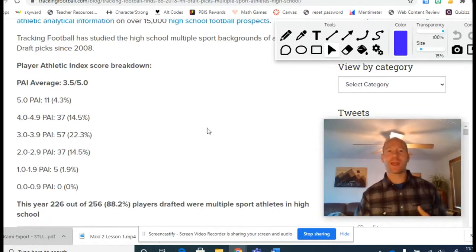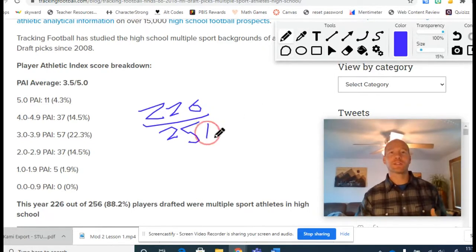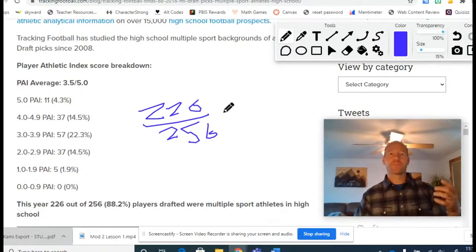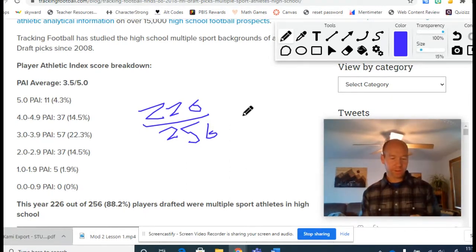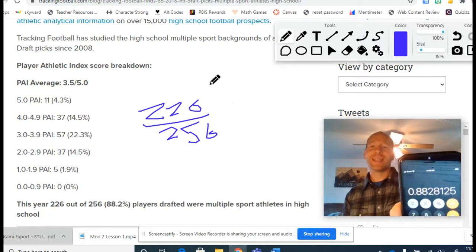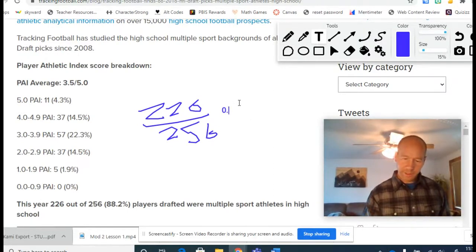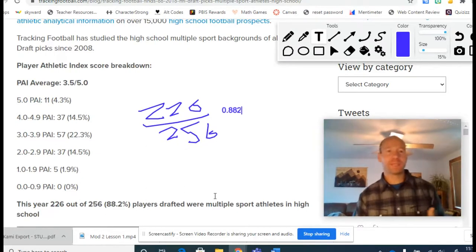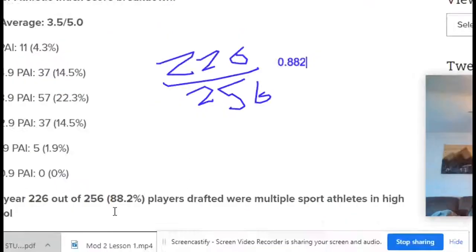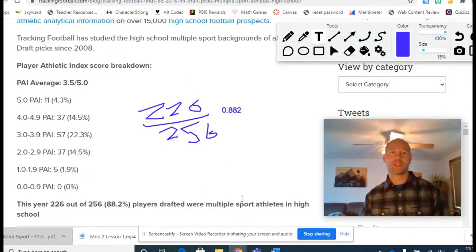So I could write that a couple different ways. I could write that as a fraction comparing those two numbers. I could write that as a decimal, right? I could just divide 226 divided by 256. I get 0.882, 0.88. But the way we say that normally in life is we could write it as a percent. We say out of a hundred, if there were a hundred people, then 88.2 of those people would be the ones who were playing multiple sports in high school. We can write it as a fraction, we can write it as a decimal, but normally in life, we write it as a percentage.